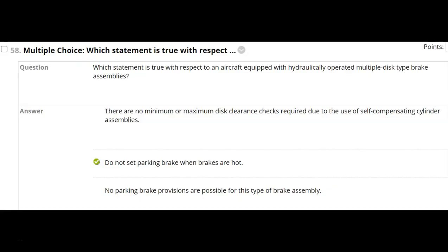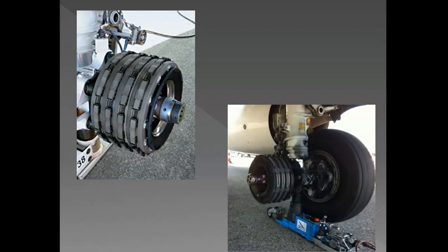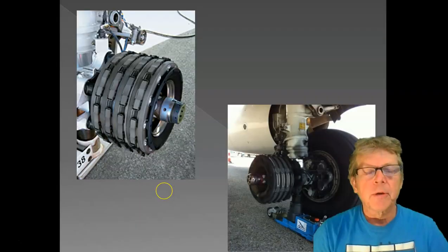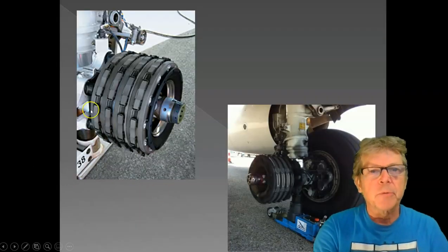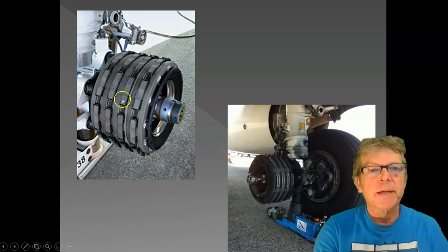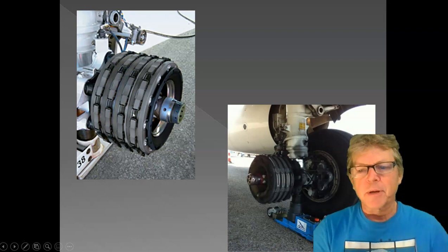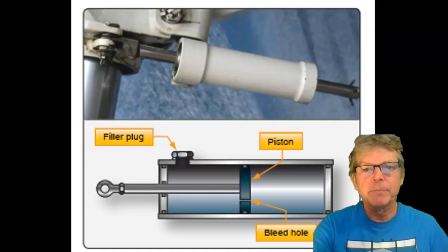Which statement is true with respect to aircraft equipped with multiple disc brake assemblies? Talking about a multi-rotor, and I'll show you a picture here in a minute. The answer is do not set the parking brake when it's hot. This is a multi-rotor, and what happens with these multi-rotors is they will stick together sometimes when they get really, really hot. So when the brakes are hot, you don't set the parking brake on a multi-rotor.